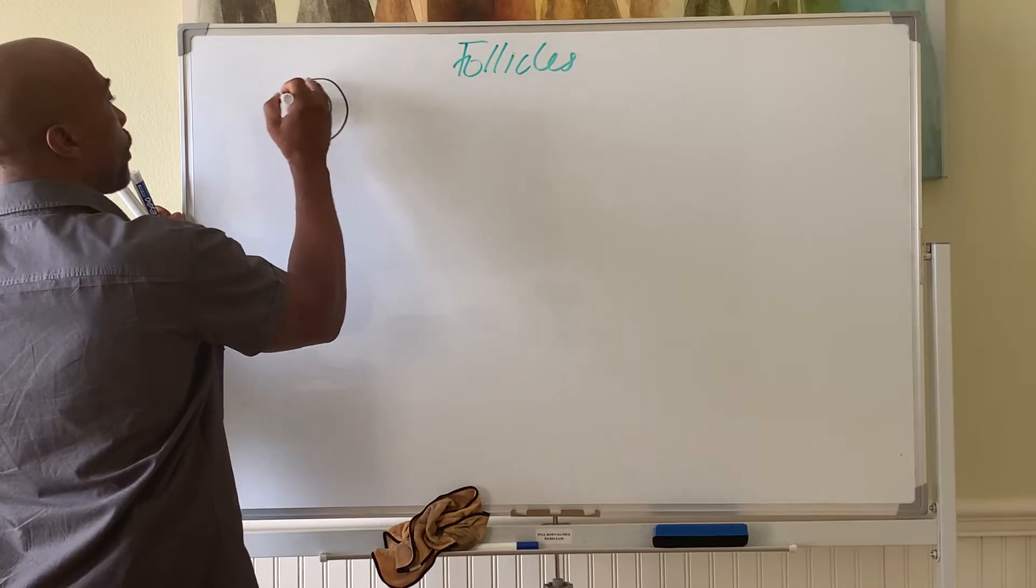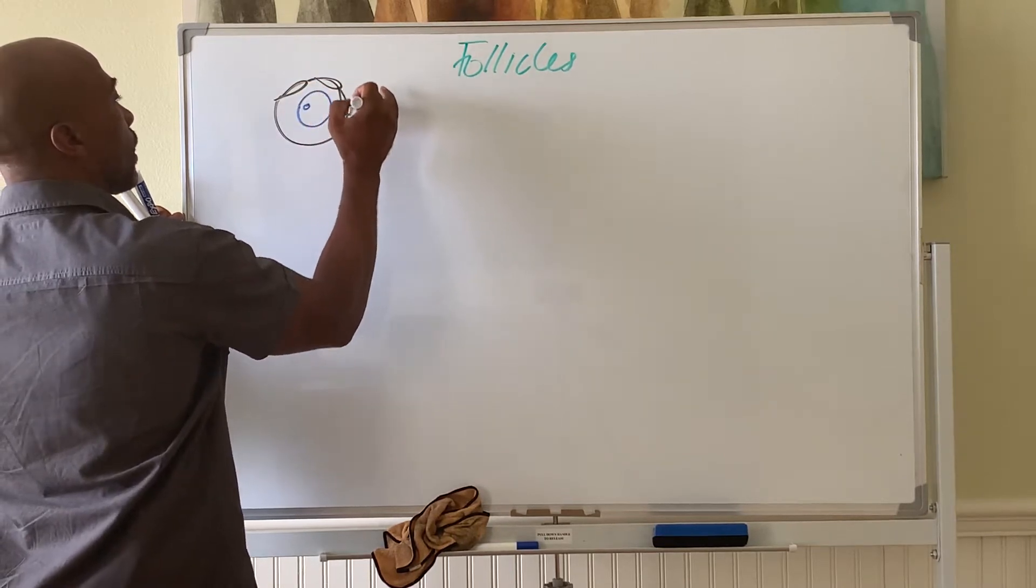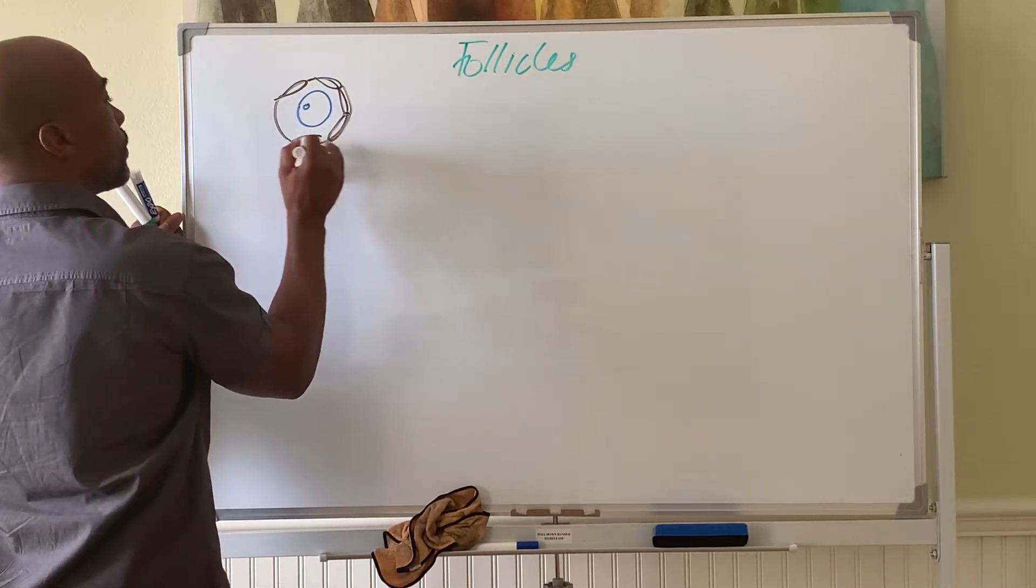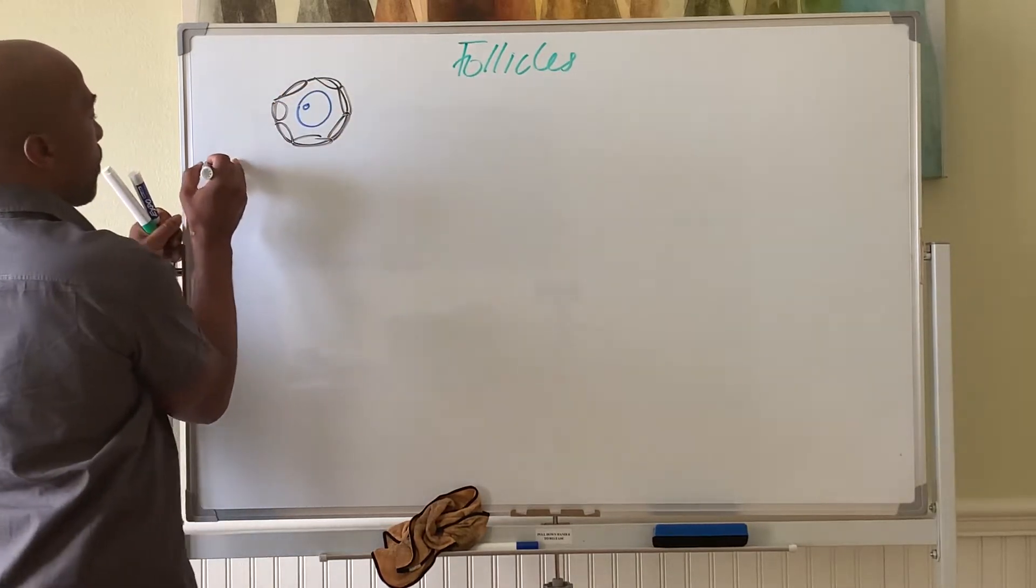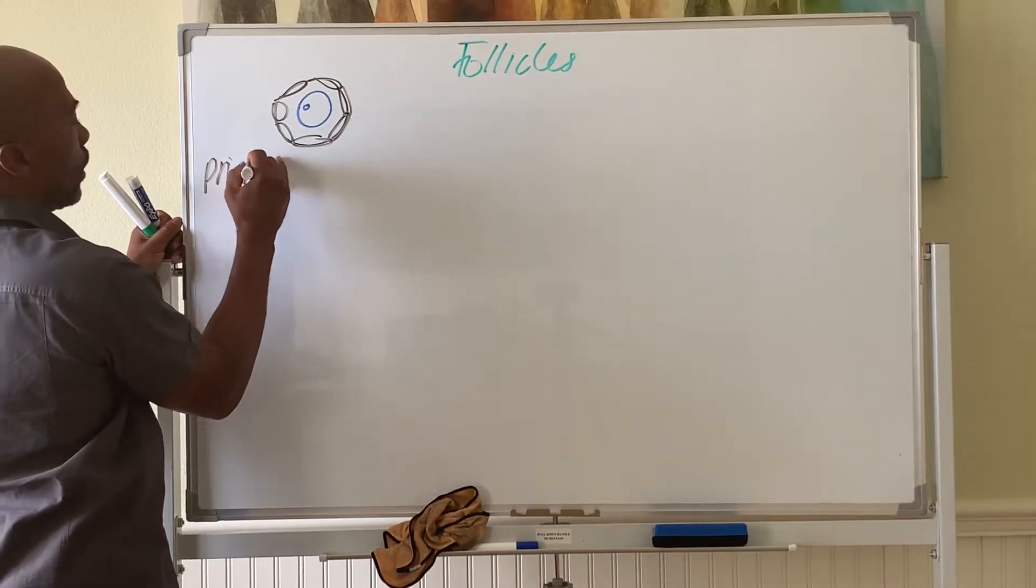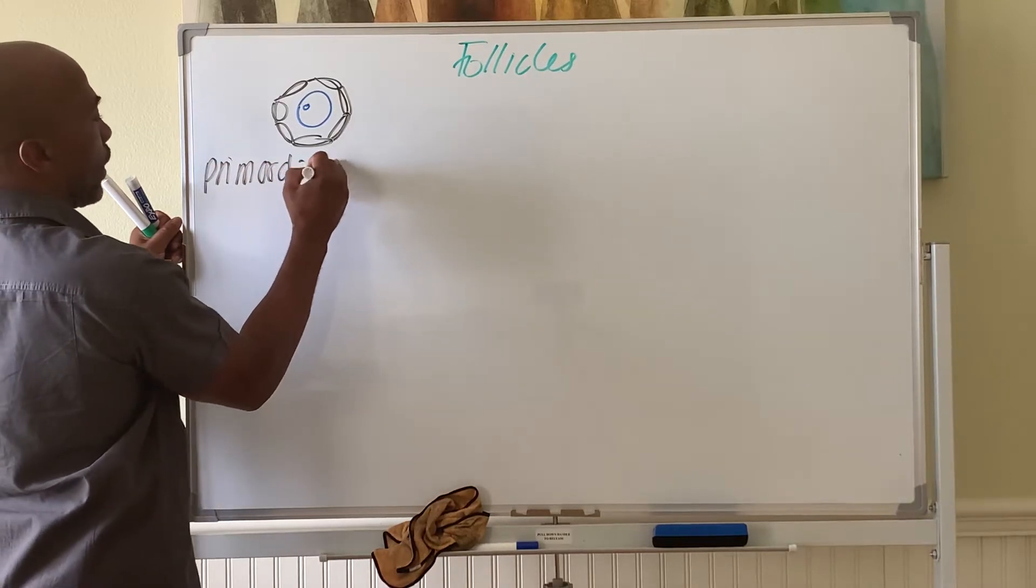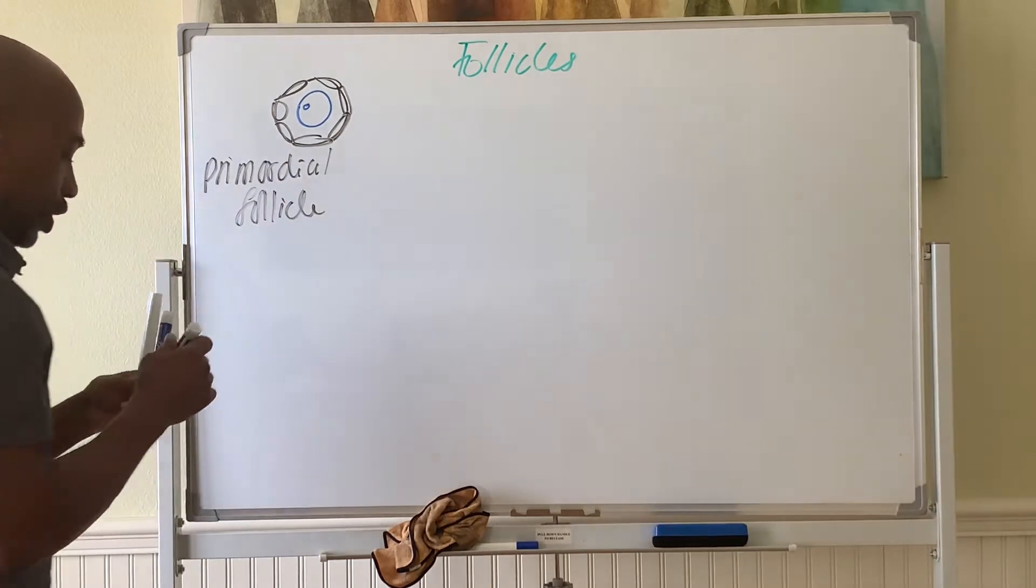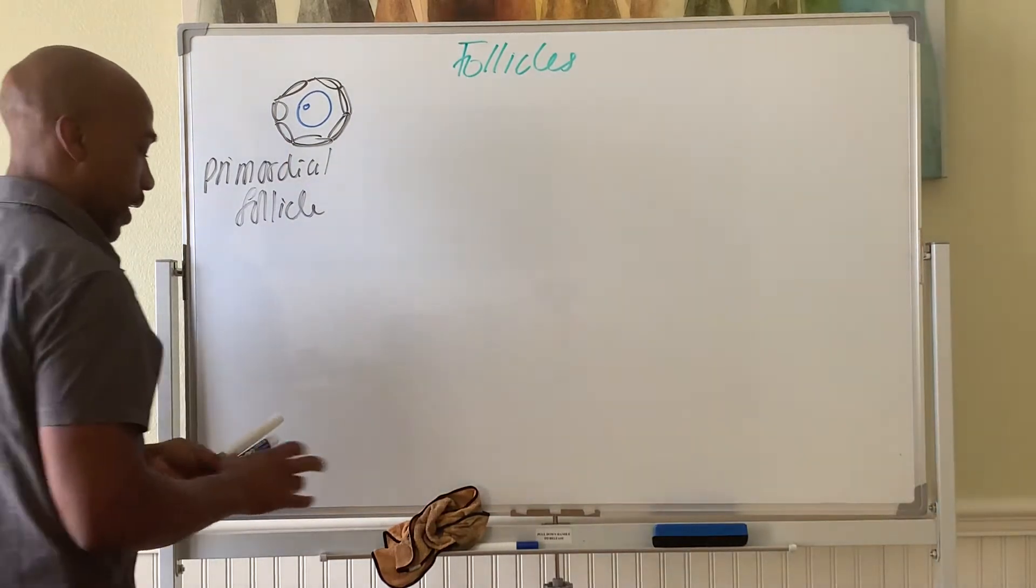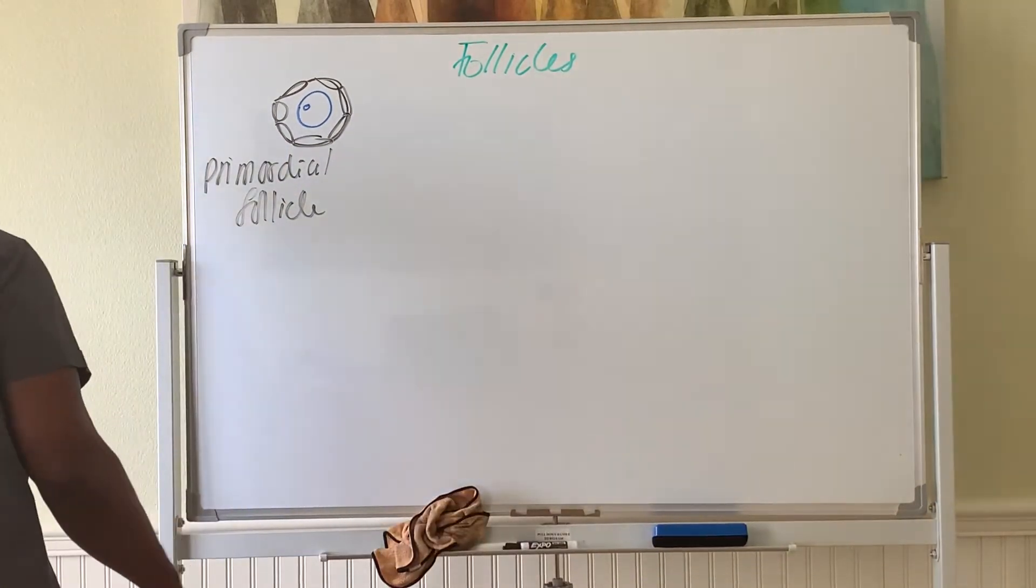In this case, the follicle at birth is called a primordial follicle. That's at birth. And these follicles will stay as such until puberty, then they start to mature.